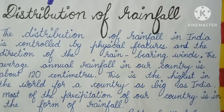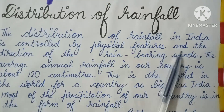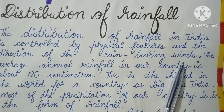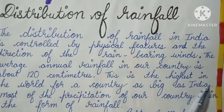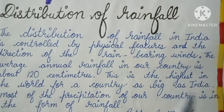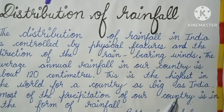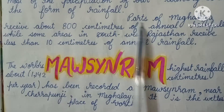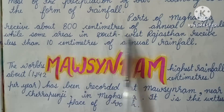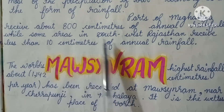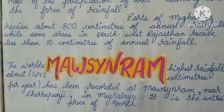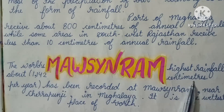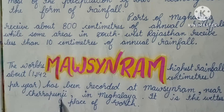Now, the distribution of rainfall. The distribution of rainfall in India is controlled by physical features and the direction of rain-bearing winds. The average annual rainfall in our country is about 120 cm, which is the highest in the world for a country as large as India. Most precipitation is in the form of rainfall. Parts of Meghalaya receive about 800 cm of annual rainfall, while some areas in southwest Rajasthan receive less than 10 cm. The world's highest rainfall, about 1,142 cm per year, has been recorded at Mawsynram near Cherrapunji in Meghalaya — it is the wettest place on Earth.